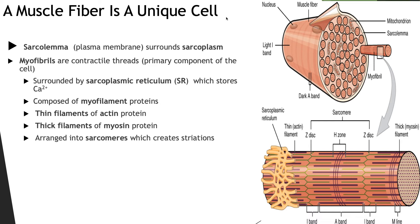The sarcoplasmic reticulum, or SR, is similar to the smooth endoplasmic reticulum of other body cells and helps to form a tubular network that surrounds each myofibril. The membrane of the SR contains ion pumps that pump calcium ions from the cytosol into the SR, where some of the calcium then binds to a protein called calsequestrin. On either side of a T-tubule, the tubules of the SR enlarge, fuse, and form expanded chambers used for storage of calcium ions called the terminal cisternae. One T-tubule plus the terminal cisternae located on either side of the T-tubule forms a triad.